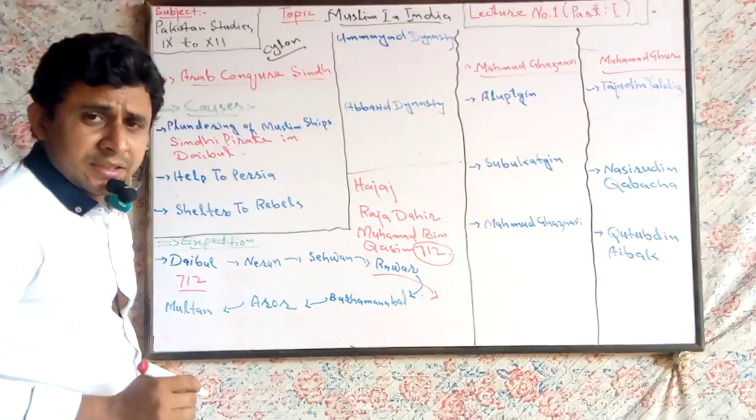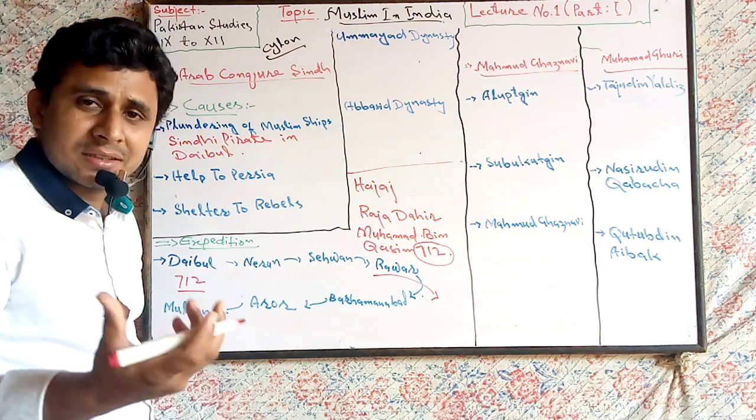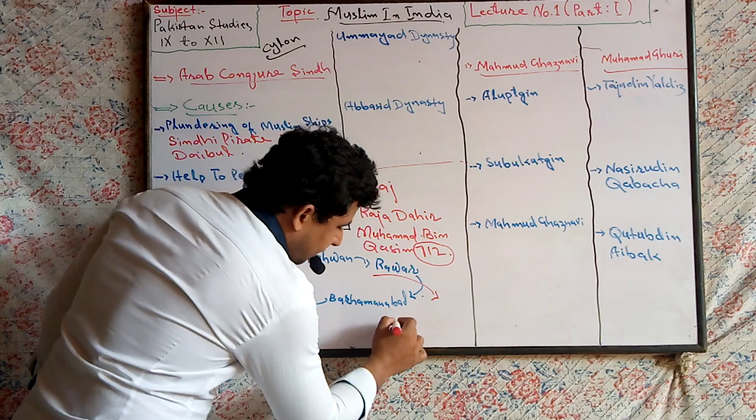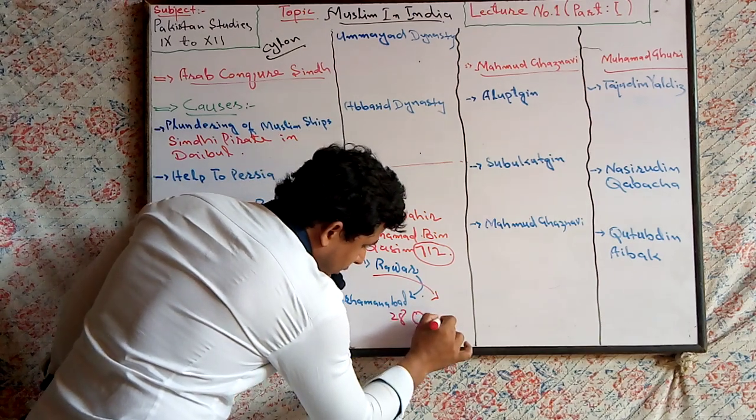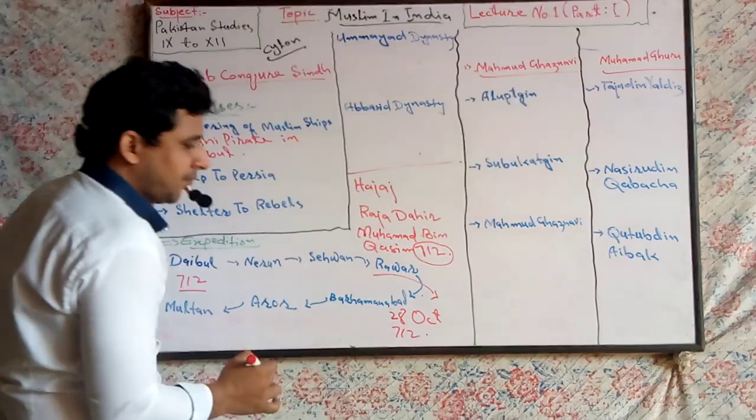In Raver, Muhammad bin Qasim met with Raja Dahar, who was the king of Sindh, and fought with him on 28th October, 712 AD.